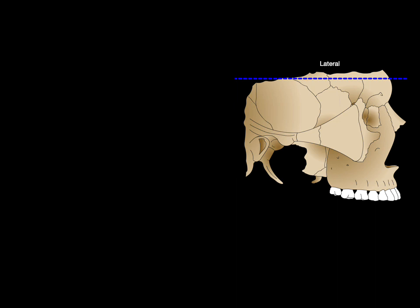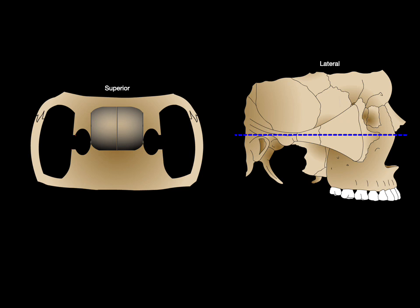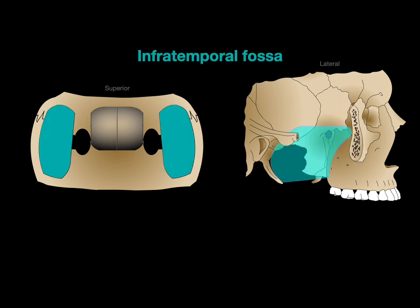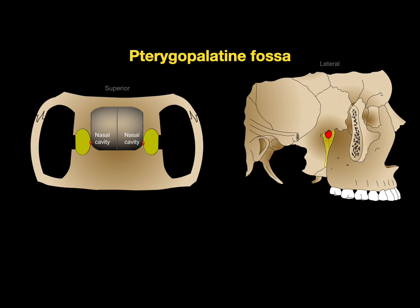Let's do that again, except with pictures. On the right, there's a lateral view of the skull, and the blue line represents the level that we see in the superior view on the left. We're going to go down a little bit through the zygomatic arch, so that on the left we see a superior view in a cross-section through the zygomatic arch. Then medial or deep to the zygomatic arch is the infratemporal fossa. On the medial wall of the infratemporal fossa is a door, and the outline of the door is called the pterygomaxillary fissure. Medial to that entranceway is the pterygopalatine fossa, and on its medial surface is an opening in red called the sphenopalatine foramen.